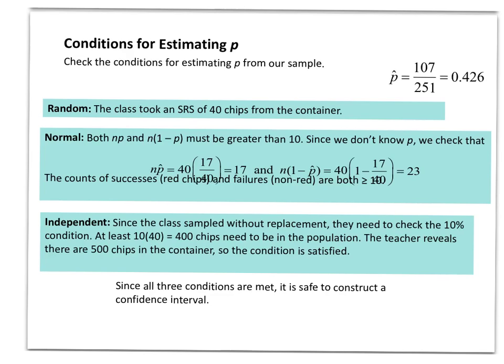Again, to check for normality we got to make sure both the number of successes and the number of failures was at least 10. And in my example here, if I drew 17 out of 40 chips, then that means 17 were white and 23 were non-white. And so since both those numbers are at least 10, I meet the conditions for being normal.